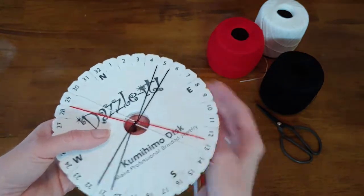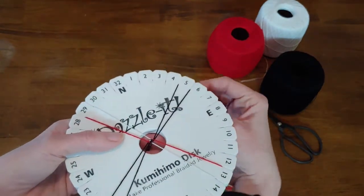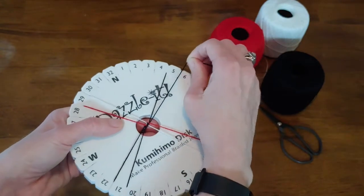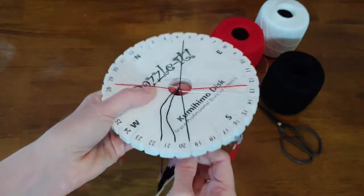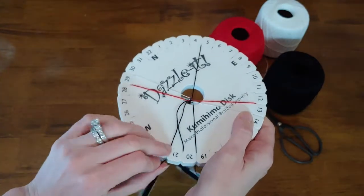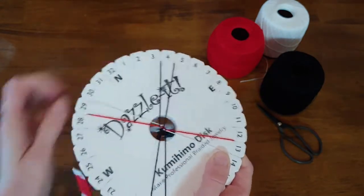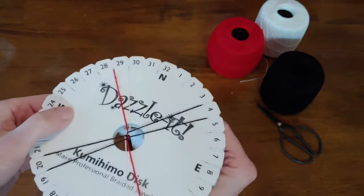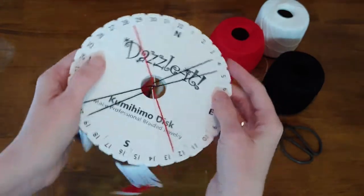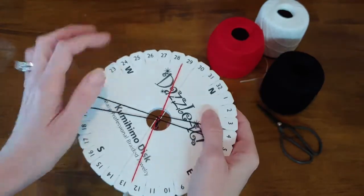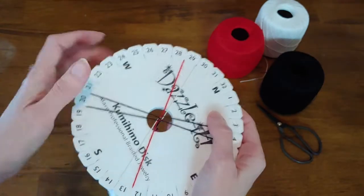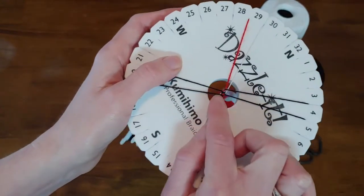And once you've got it set up, you'll start off with the top right going down, and then the bottom left going up. Now it's very important to keep your strings very tight. And once you've done that, if you notice, I did a quarter turn, and now my red and white strings are underneath the black.